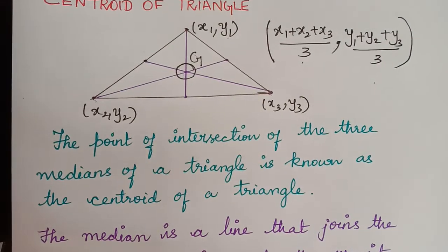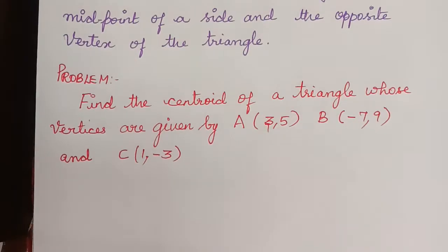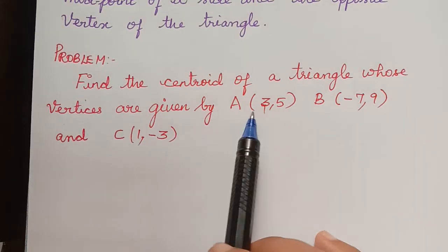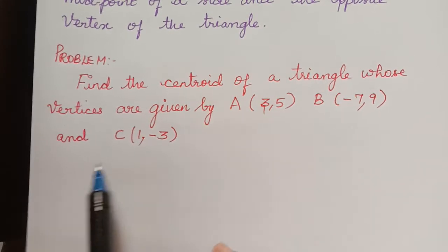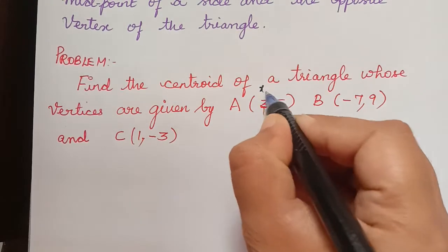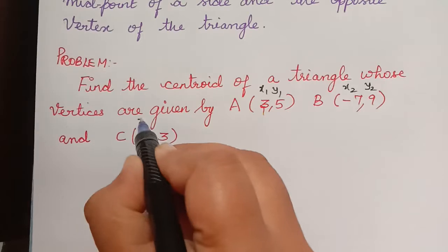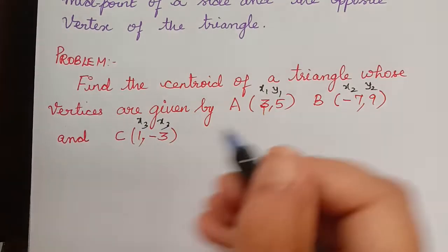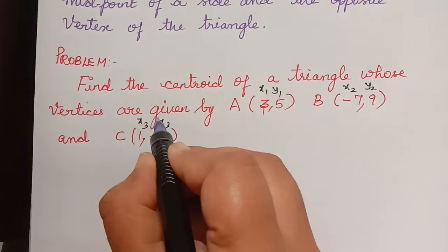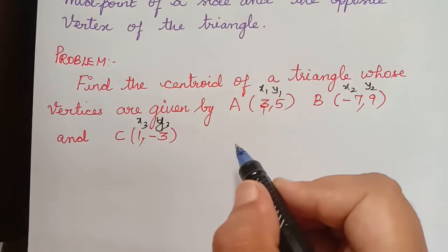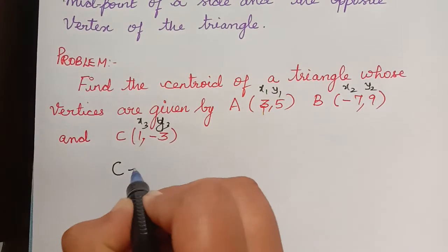So we shall see an example now. Find the centroid of a triangle whose vertices are given by a, b and c. So now first let us choose x1, y1, x2, y2, x3 and y3. And after substituting in the formula we get the centroid of this triangle.